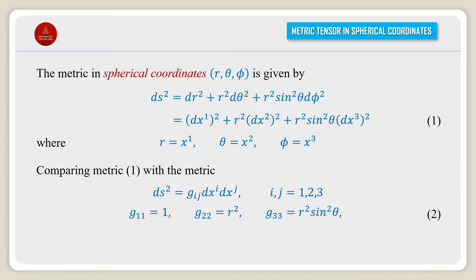g₂₂ = r², and g₃₃ = r²sin²θ. And gᵢⱼ = 0 when i is not equal to j.